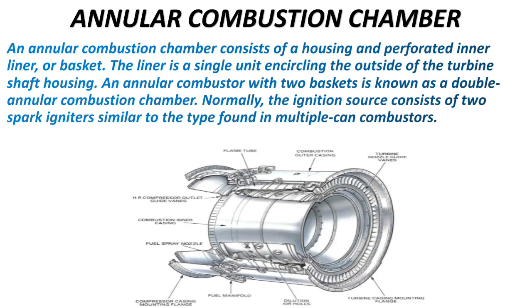Here you can see a picture of an annular combustion chamber. It has two spark igniters similar to the can type combustion chamber. This type of combustion chamber has a perforated inner liner that encircles the outside of the turbine shaft housing. There is a flame tube which is sufficient to propagate flame throughout the basket, and therefore it does not require interconnecting flame tubes as in the can type combustion chamber.